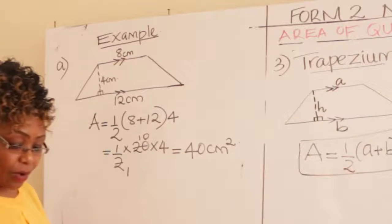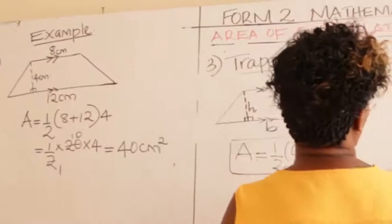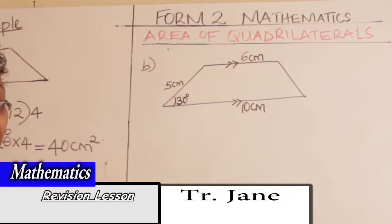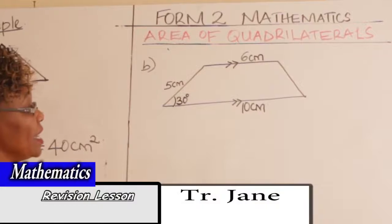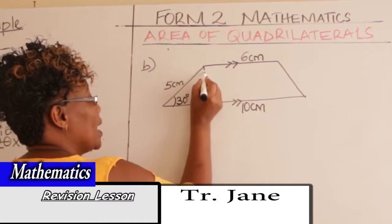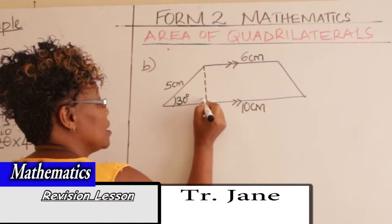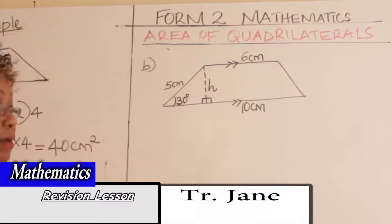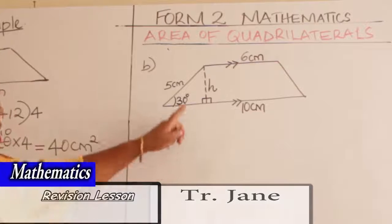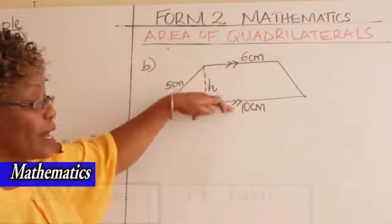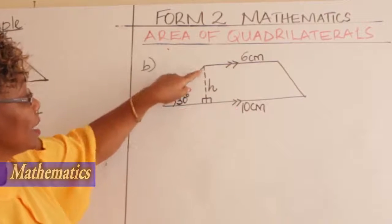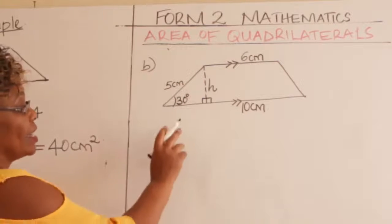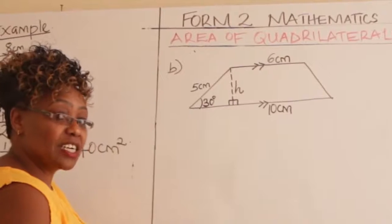Now Liana, we look at another example with a different trapezium. How do you find the area of such a trapezium? The first thing is to introduce the perpendicular height h, because we need it. You already have the two parallel lines, so you need to find the height. How do you find the height? You use trigonometric ratios.